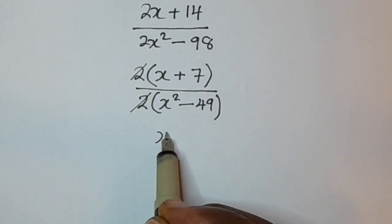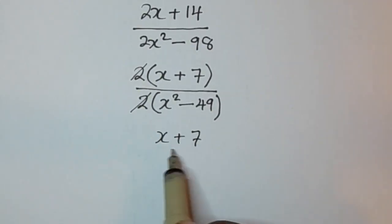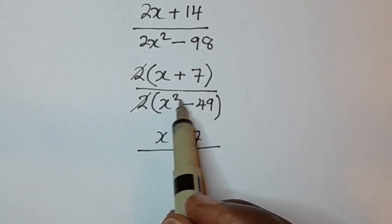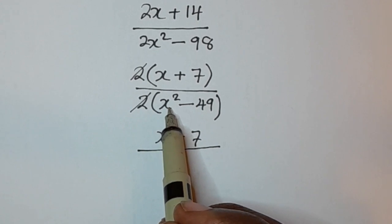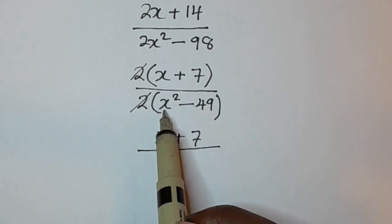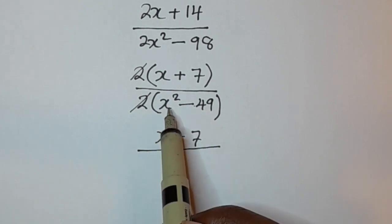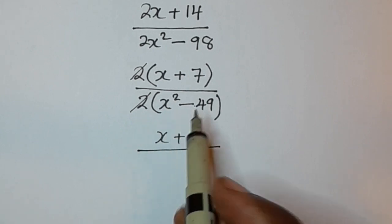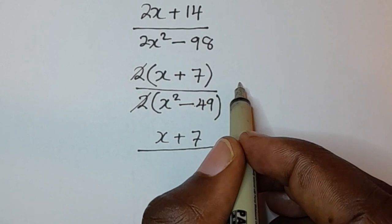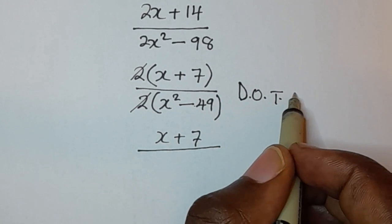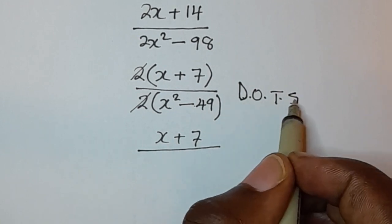Then we'll have x plus 7 on the numerator, all over x squared minus 49. x squared is a square number and 49 is a square number. So whenever you have two square numbers subtracting each other, you have the form of difference of two squares.